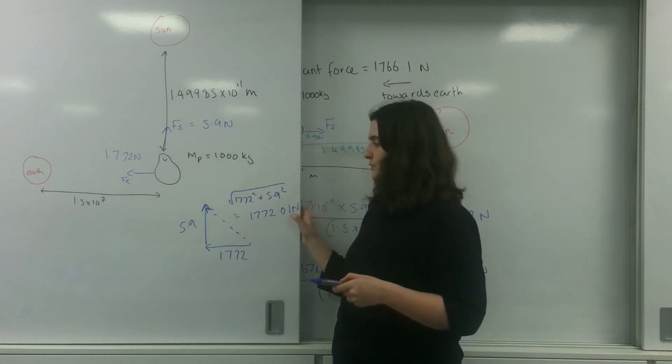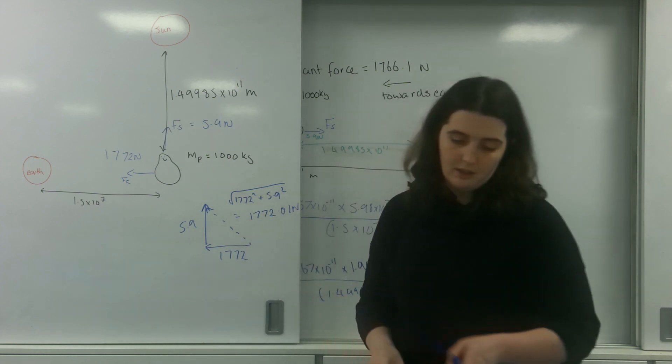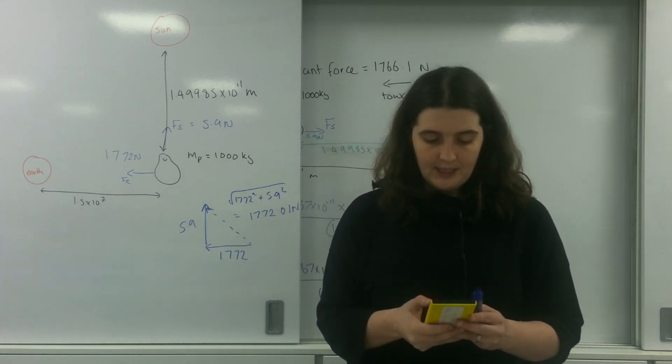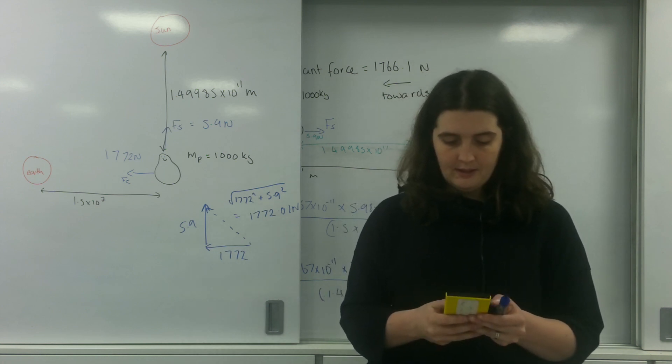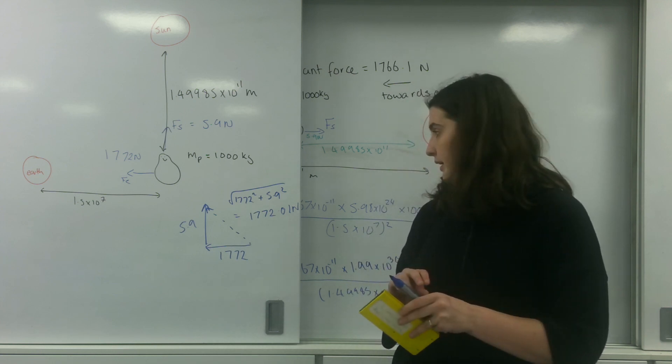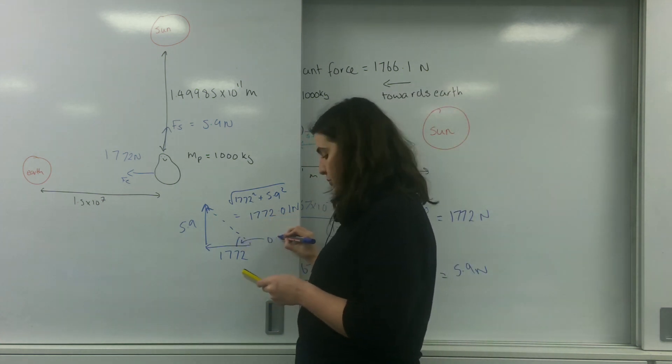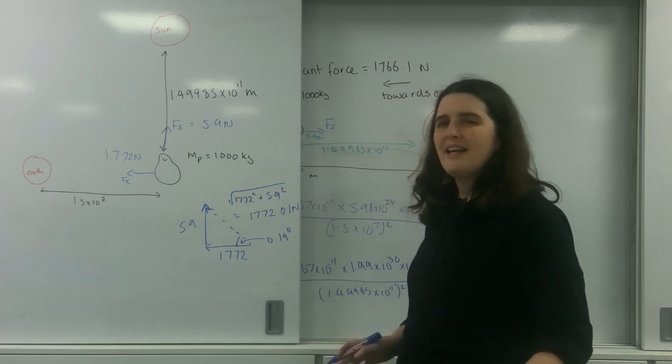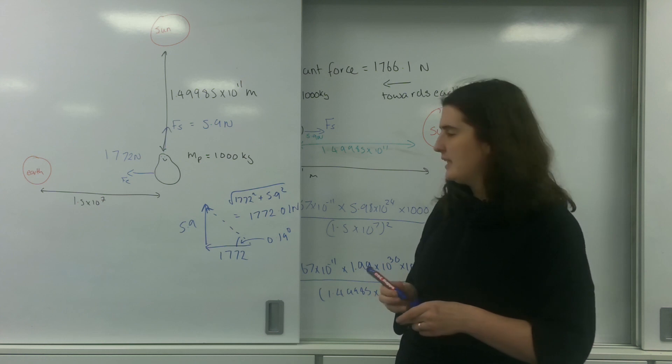So 1772.01 newtons. The reason I've gone to so many decimal places, far more significant figures than I should, is because you can imagine this is such a small force. I'm predominantly going in this direction. If I find this angle here, you find that this angle here is like 0.19 degrees. It's so tiny. There's such a negligible force towards the Sun, but it is slightly deflected there.